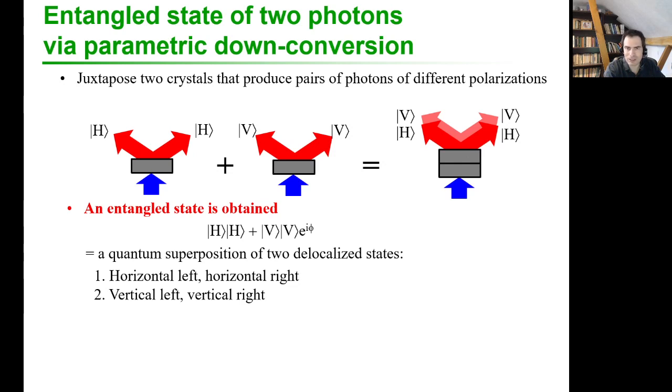It does not occur all the time, it does not occur deterministically, it occurs spontaneously. That is, sometimes quite rarely you generate a pair of photons. But now here, look, you sometimes generate a pair of horizontal photons and sometimes a pair of vertical photons.